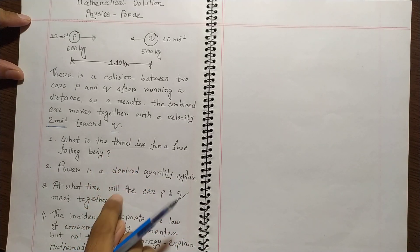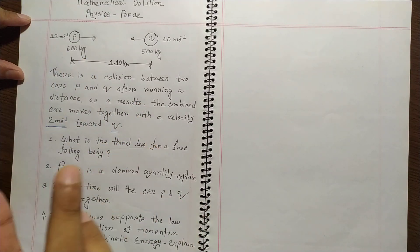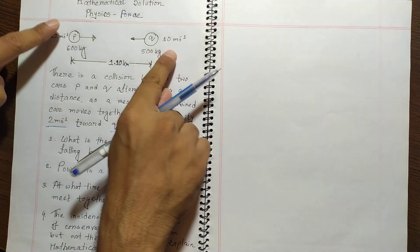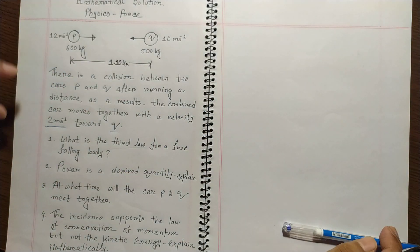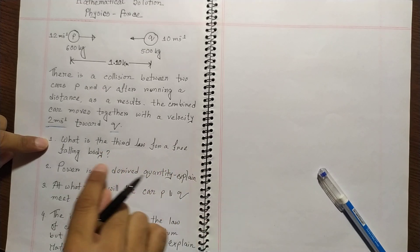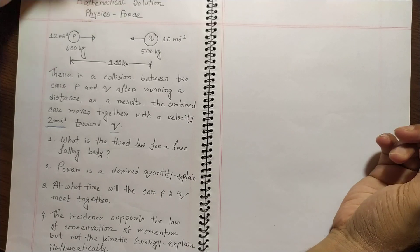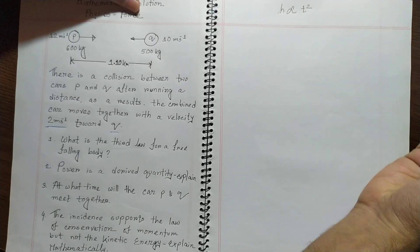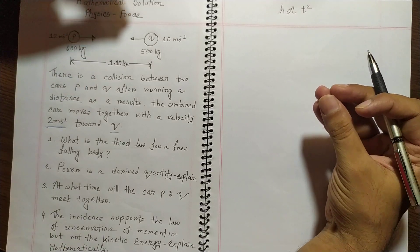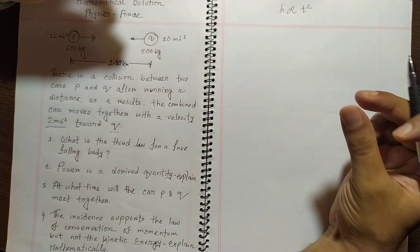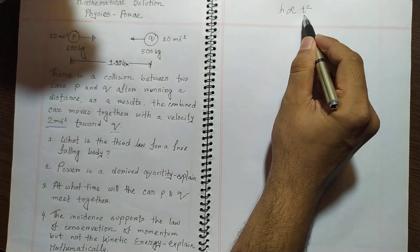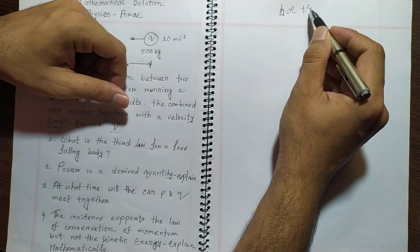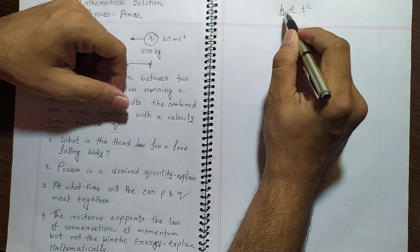In creative questions there are four questions we need to solve. The first question is: what is the third law for a free falling body? This is about Galileo's law — the third law states that h is proportional to t squared. For an object freely falling from a stationary state, the distance it covers in a specific time is squarely proportional to that time: h ∝ t². This was established by Galileo Galilei.